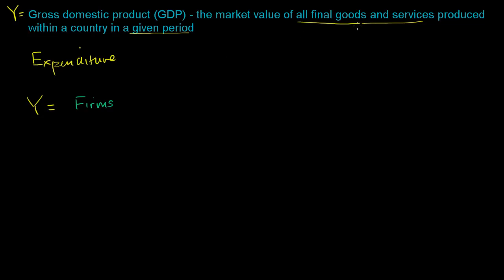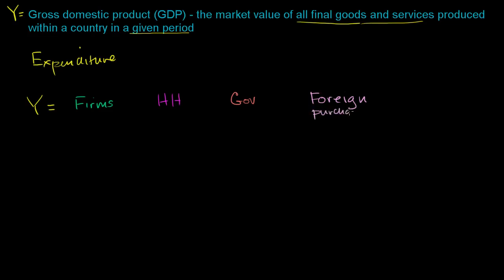Well, you could have your firms — firms might have spent money on these goods and services produced in a country. You also have your households, who obviously could have spent some money on goods and services produced in this country. Then you have the government, which could have spent some money on goods and services. And if we assume that we're trading with other countries, there are foreign people outside of the country who might have spent money on goods and services — so foreign purchases, or another way to think about this: exports.